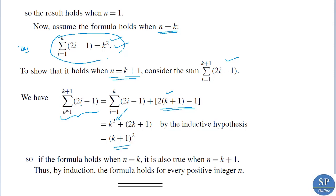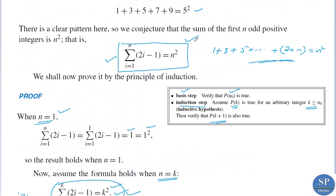So we obtained that summation i from 1 to k+1 of (2i minus 1) is equal to (k+1) squared. We obtained that the result is true for n equals k plus 1 if it is true for n equals k. Therefore, by mathematical induction, the formula holds for every positive integer n. So we proved this result.